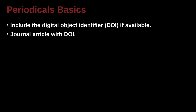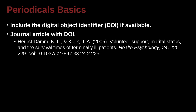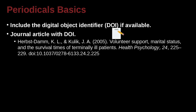If you have the document object identifier, you can go ahead and use that. Here's an example. We have the author's last name, comma, first name, period, middle name, period, comma, ampersand, second author's last name, first name, middle name — look at the spacing there very carefully. Then we have parentheses with the year of publication, then a period. Then we have the name of the paper, which is called 'Volunteer Support, Marital Status, and the Survival Times of Terminally Ill Patients.' Pay attention to the capitalization: lowercase s, lowercase m, lowercase s — it's all lowercase except for the first letter of the first word.